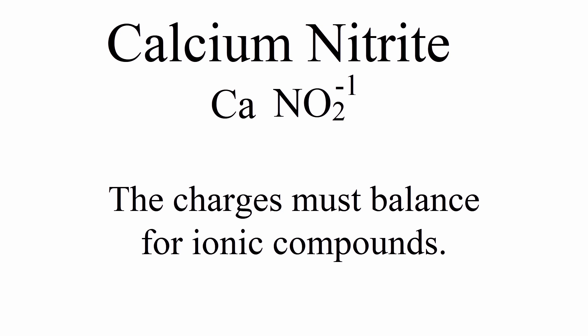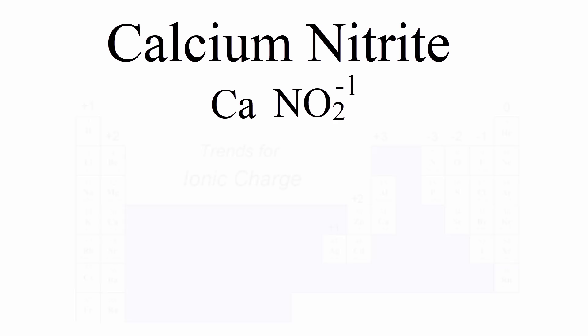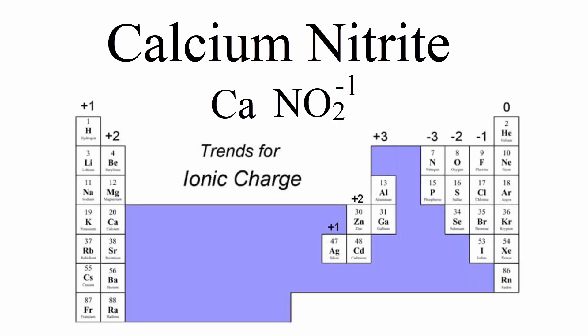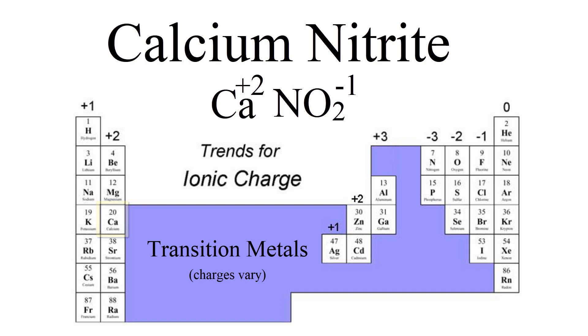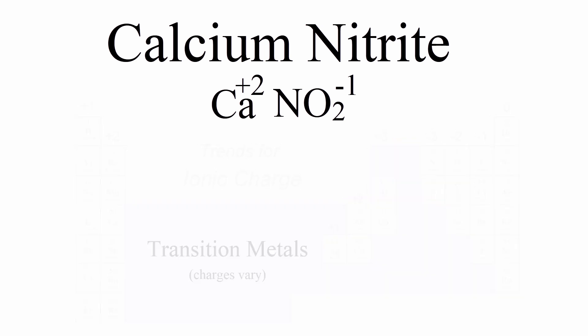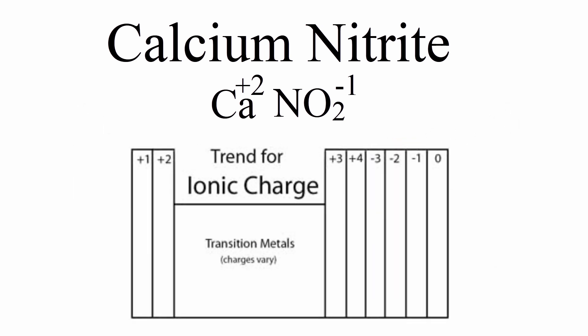Let's use the periodic table to look up the charge on the calcium ion. Calcium is in group 2, so it has a charge of plus 2. In fact, all of the elements in group 2 have a plus 2 charge. You need to memorize the charges on those different groups to be successful writing formulas. This table here might help you get started memorizing the charges.